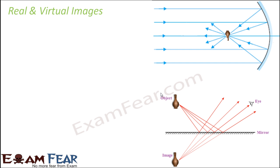When we talk about images, we talk about two types: real images and virtual images, and it is very important to understand the difference between the two. Looking at these two pictures on the screen, which are basically ray diagrams, we can infer from these two scenarios the key distinctions between them.